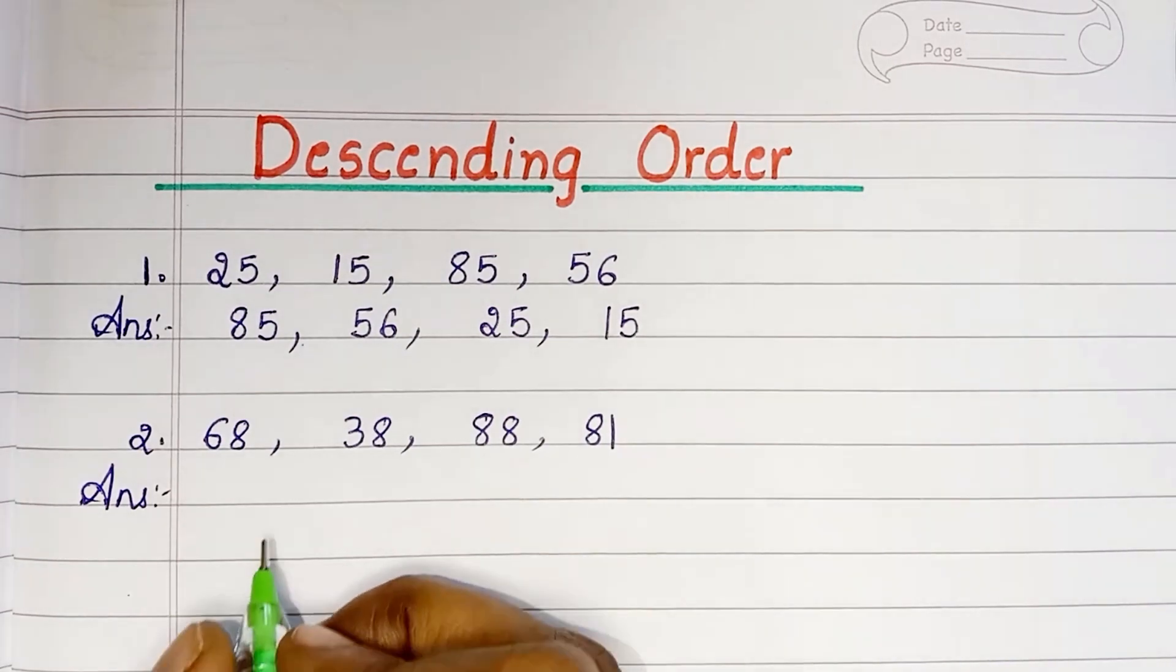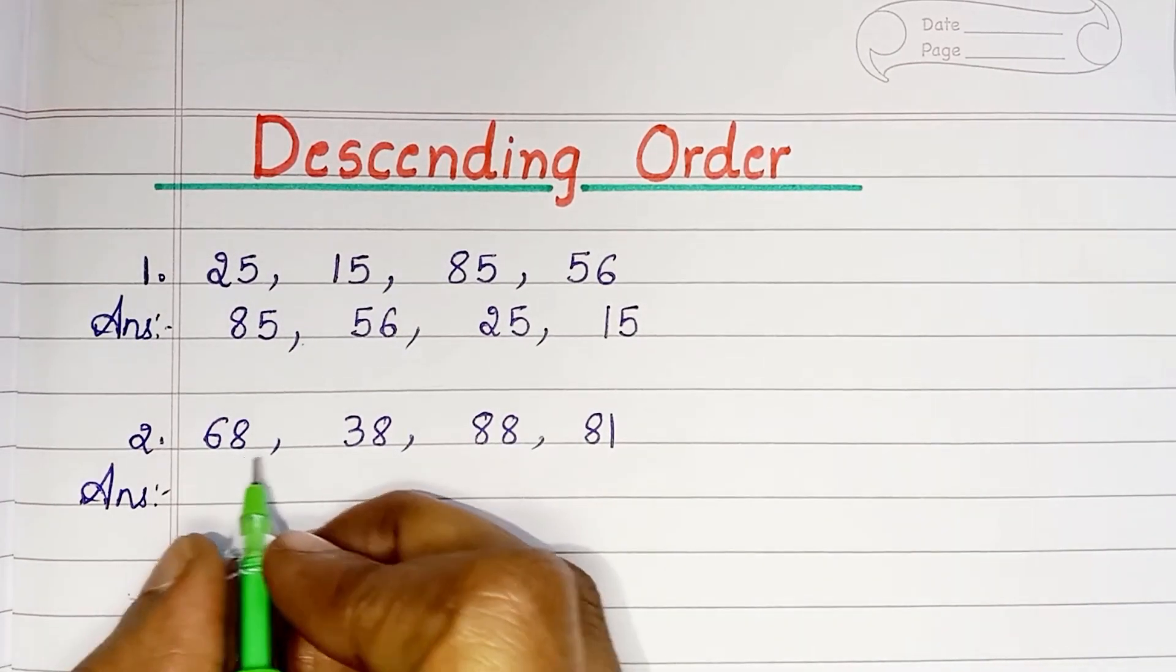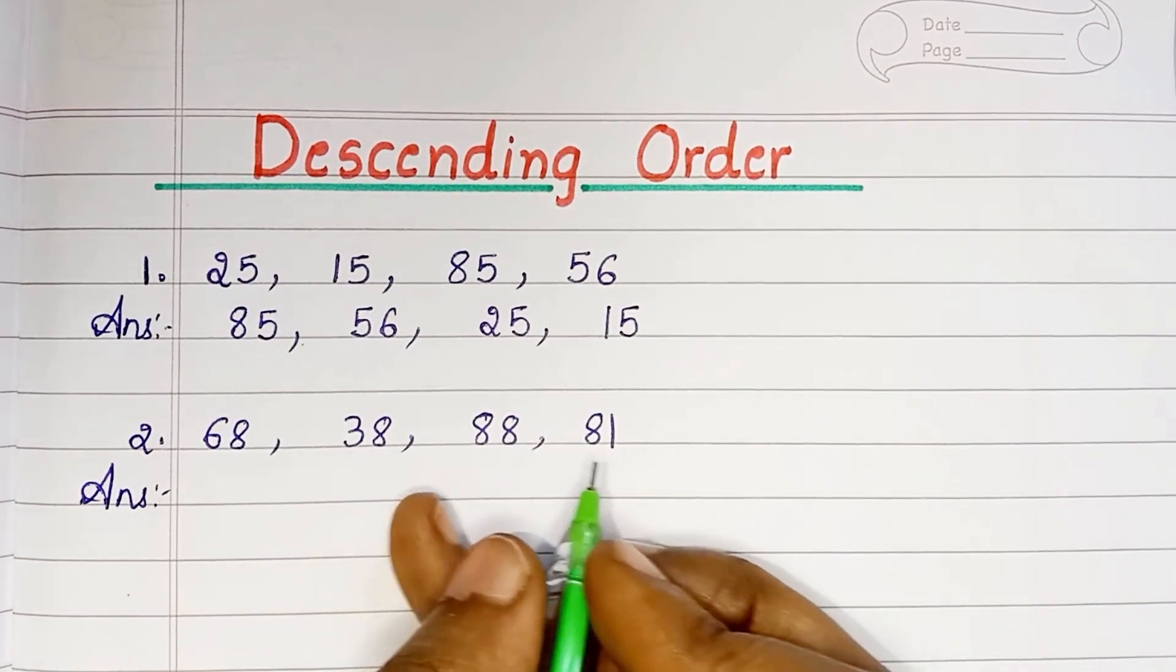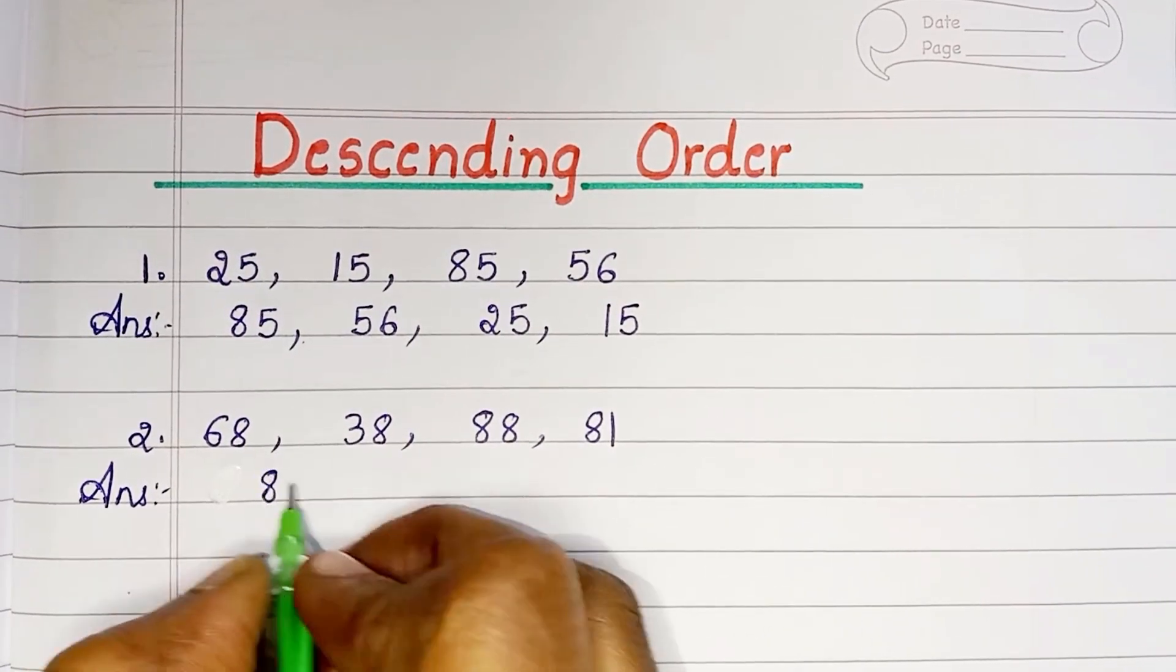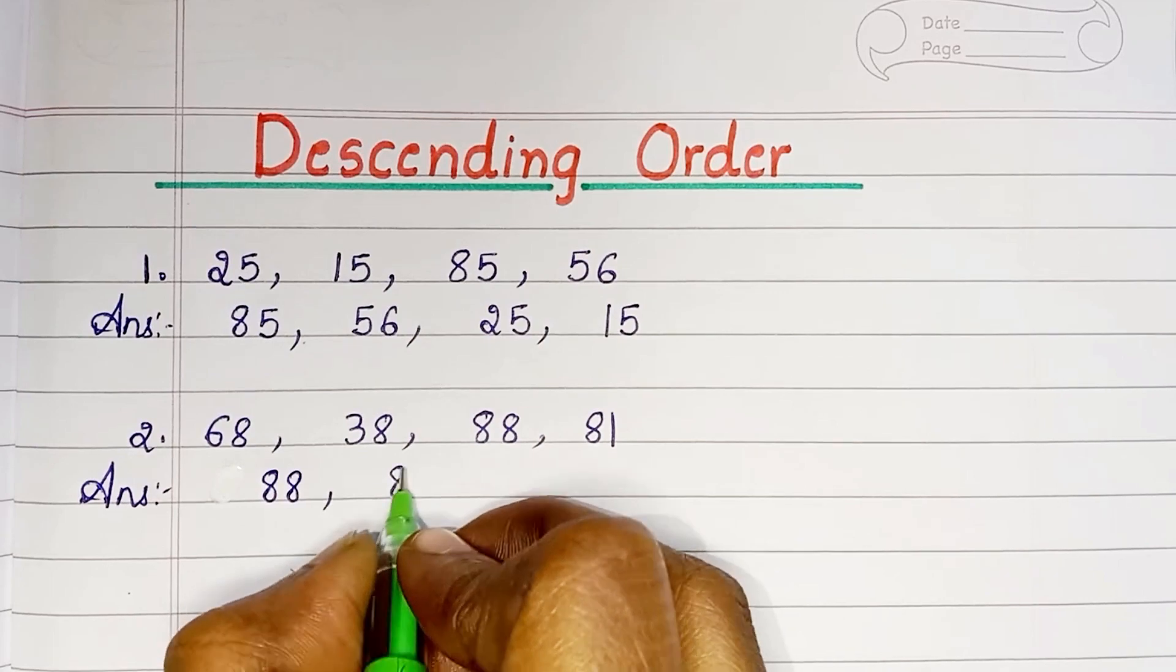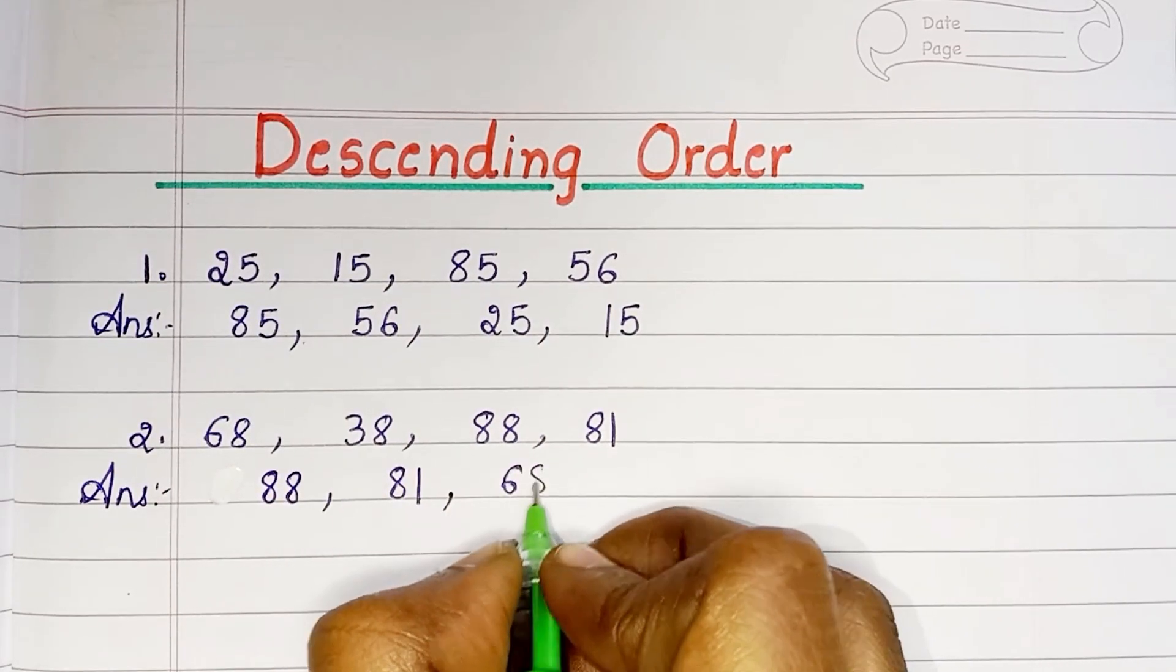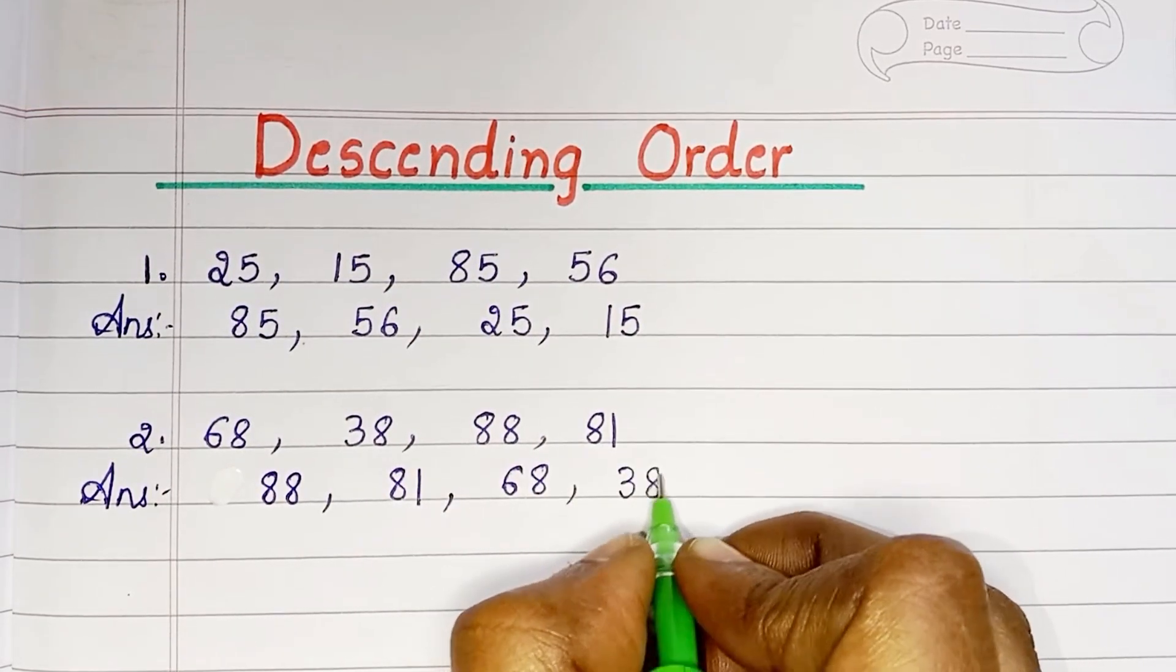Next set of numbers: 68, 38, 88, 81. In descending order: 88, 81, 68, 38.